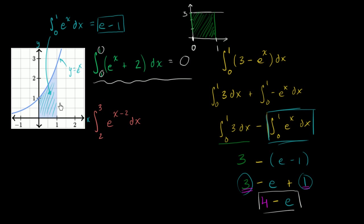When you see something like this, the key thing that may jump out is that e to the x minus two is a shifted version of e to the x — it's shifted by two to the right. So instead of this point being at zero, it's going to be shifted to two, and the curve is going to look like that. The bounds are from two to three, so we're going from this point right here to three, shifted two units to the right.